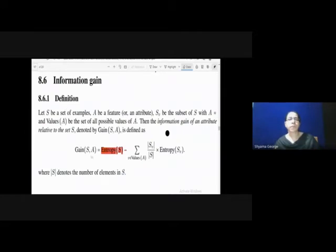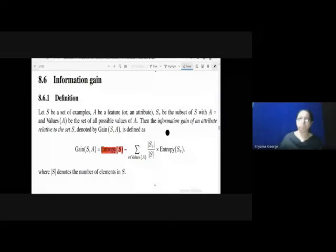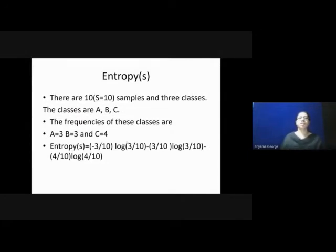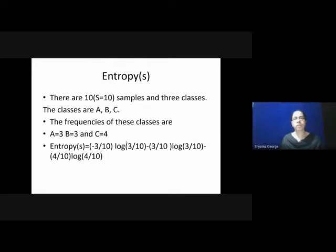This is the formula for information gain: Gain(S, i) is equal to entropy(S) minus the sum over values V of A of |Sv|/|S| times entropy(Sv). The definition of entropy S is sigma i equals 1 to C of minus Pi log base 2 of Pi. We are going to find out the entropy of the whole data set. There are 10 samples and 3 classes: A, B and C, with 3 records in class A, 3 in class B and 4 in class C. The entropy of the whole data is: entropy(S) = minus 3/10 log₂(3/10) minus 3/10 log₂(3/10) minus 4/10 log₂(4/10).